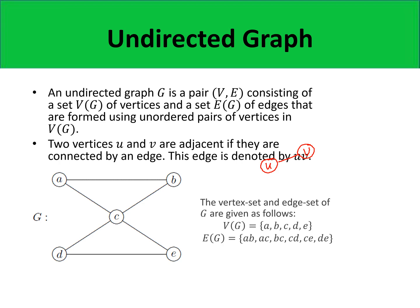Consider the graph G on your screens right now. The vertex set of graph G would consist of the points A, B, C, D, and E. And then the edges are: A-B, A-C, B-C, B-D, C-D, C-E, and D-E.